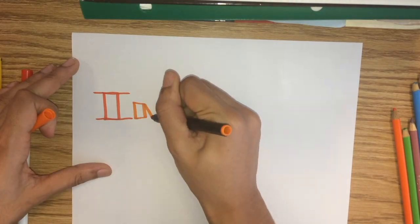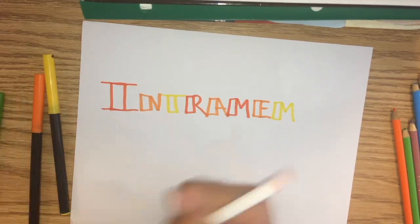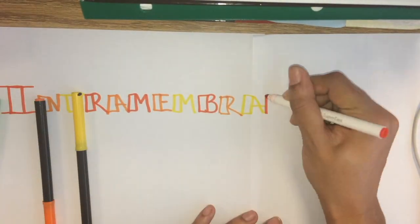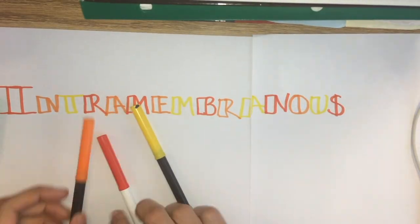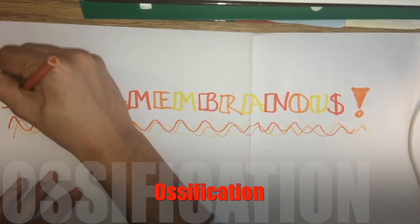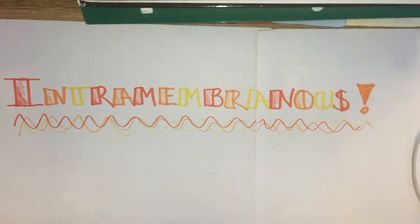The first process is called intramembranous ossification. If you break up the word, intra means within, membranous means membrane, and ossification means the formation of bone. If you put the whole word together, it means the formation of bone within a membrane.